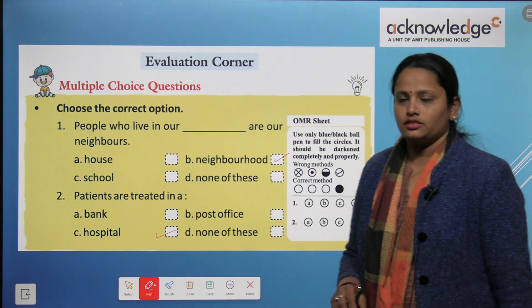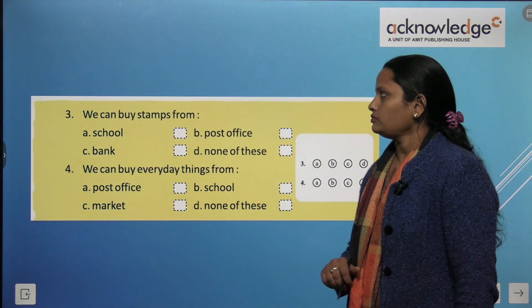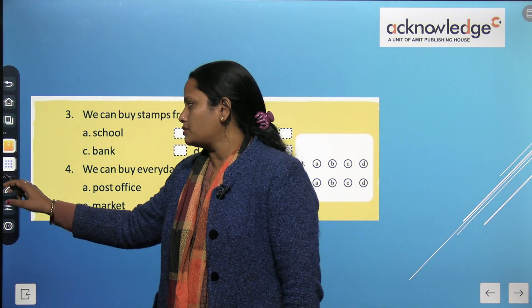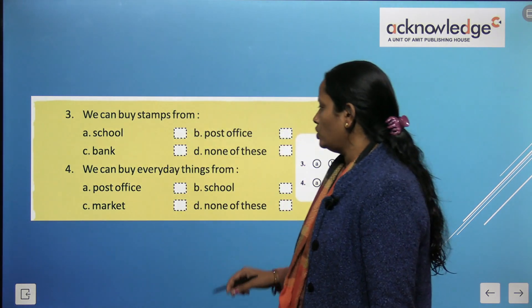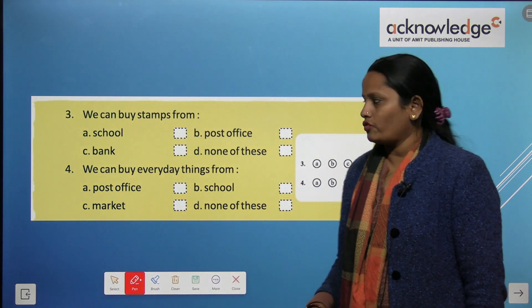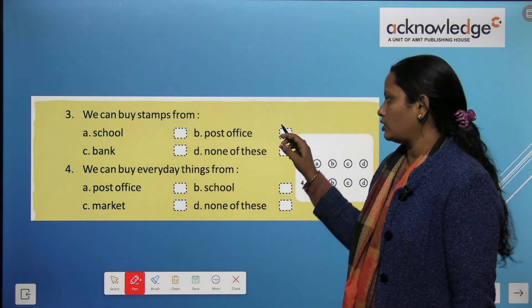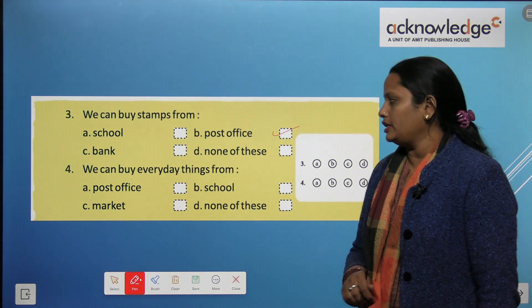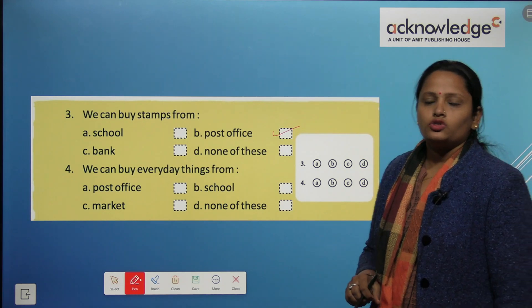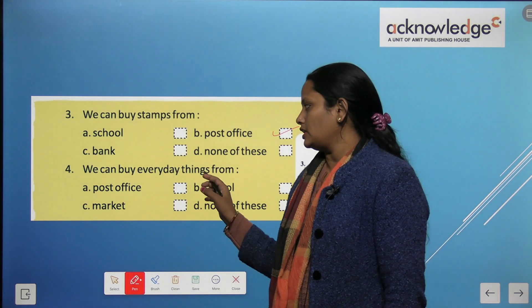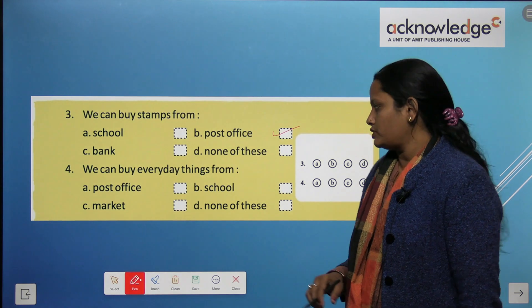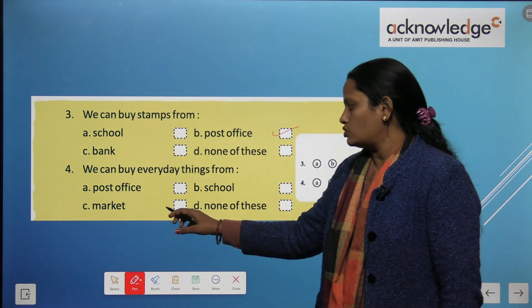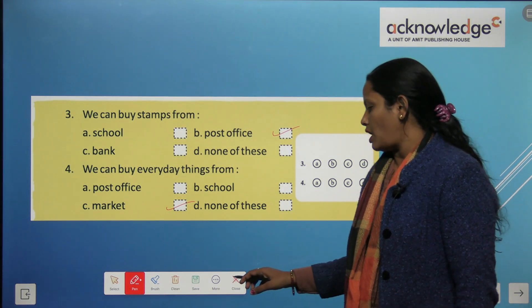For the multiple choice questions: a hospital is the correct answer for where we go when we are sick. We can buy stamps from the post office — that is the correct answer. We can buy everyday things from the market — that is the correct answer.